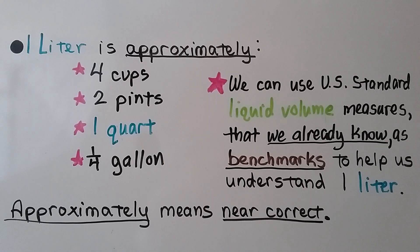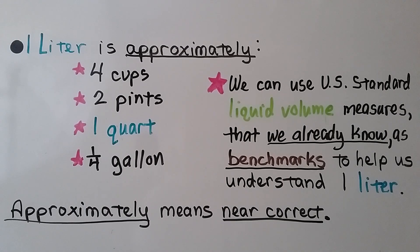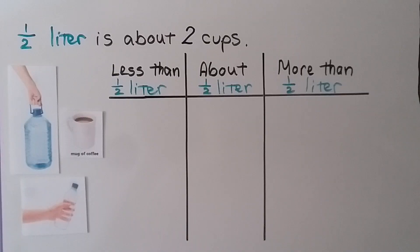Remember, approximately means near correct — it's not exactly correct, but it's close to being correct. A half liter is about two cups.